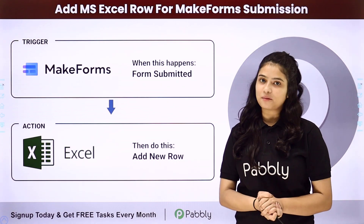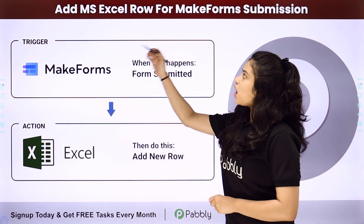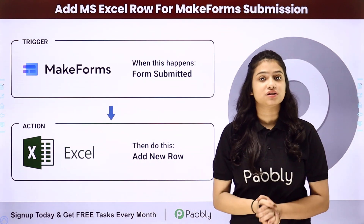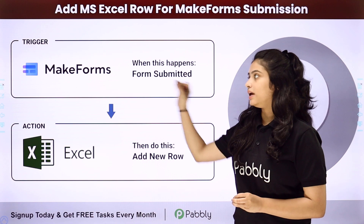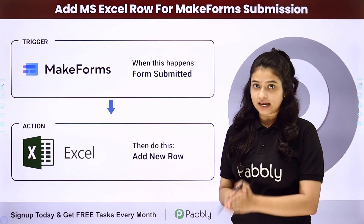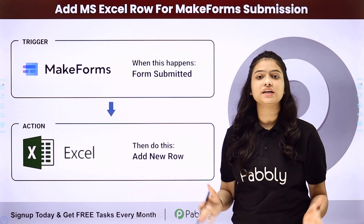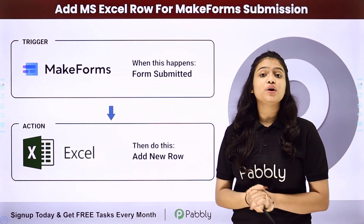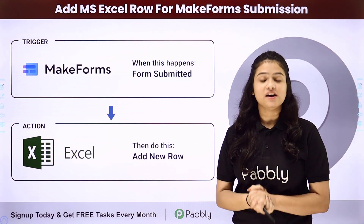Hello everyone, welcome to Pabbly Connect. In today's video, we are going to learn how to add an MS Excel row for a Make Forms submission. Whenever a new form is submitted in Make Forms, automatically a new row should be added in the Excel sheet to capture the response of the form submission and to create the record of that submission. So how are we going to do this process effortlessly and automatically?